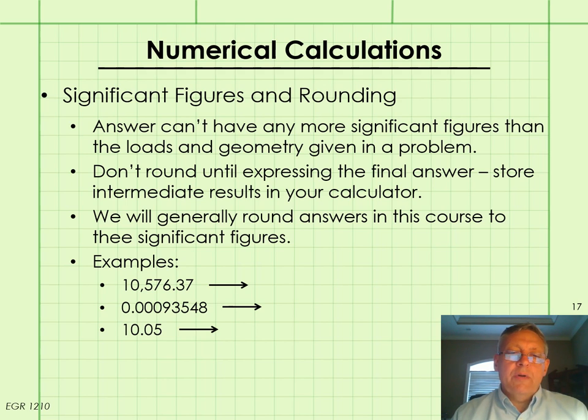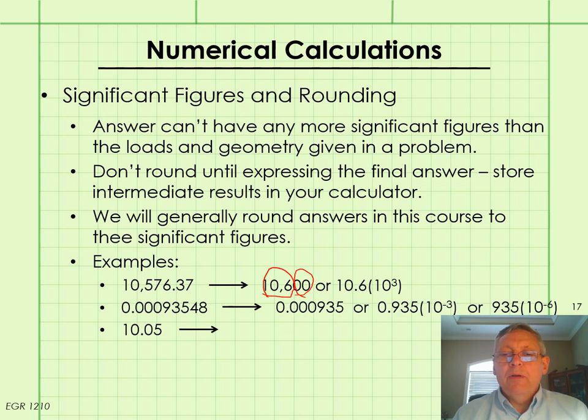I'll give you some examples here of rounding to three significant figures. So this first one here, 10,576.37 rounded to three significant figures is 10,600, where these numbers are significant and these two zeros are considered placeholders, not significant. 0.00093548 would round to 0.000935, where these are significant. And the zeros after the decimal point are considered placeholders.